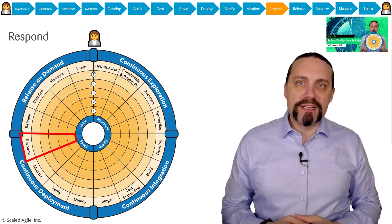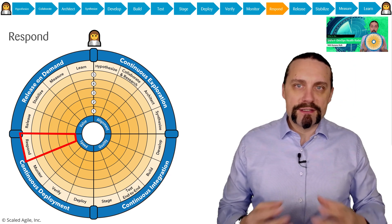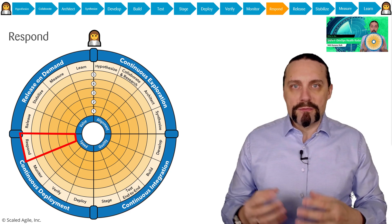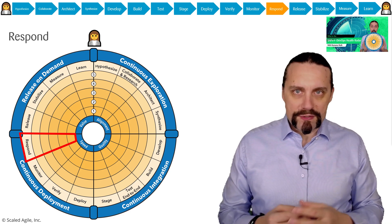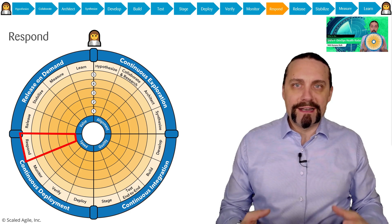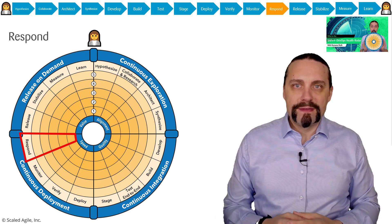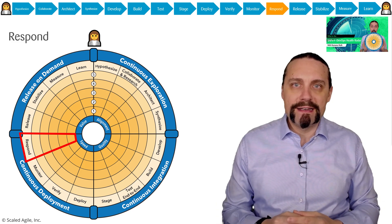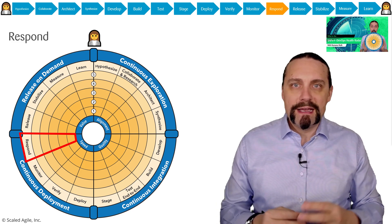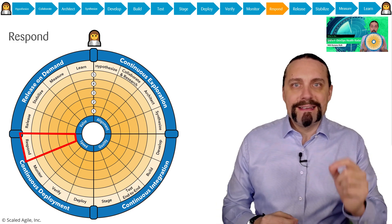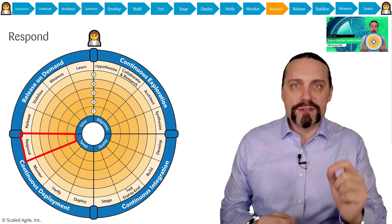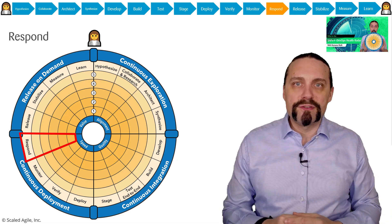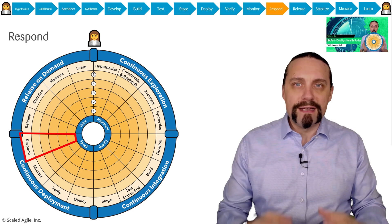The SAFe for DevOps Health Radar starts with the customer. The customer and also the business have bright ideas. In the hypothesis step, we take these bright ideas and extract the hypothesis statement out of these ideas, and then we put them into epics.